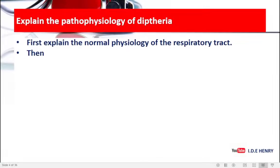Explain the pathophysiology of diphtheria. Firstly, to explain the pathophysiology, you need to start with explaining the normal physiology of the respiratory tract. For example, the respiratory tract is responsible for all respiratory requirements, in which air is breathed in through the mouth, goes down the airway, and then is diffused. Waste product gases such as carbon dioxide are diffused out of the airway through the mouth.